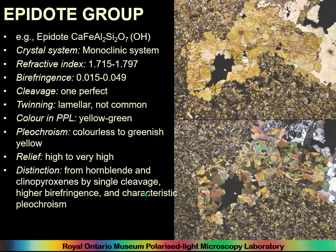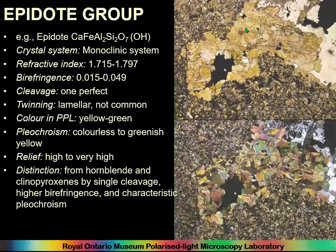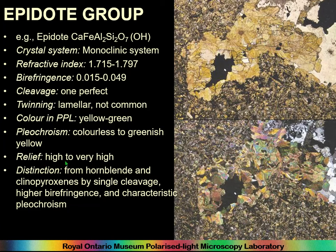Epidote has a horrible yellowish pleochroism — colors ranging to greenish yellow, a sickly yellow. You can see it ranging from lighter to darker yellow within the same inclusion. It's distinguished from hornblende and clinopyroxenes by its single cleavage, higher birefringence, and characteristic pleochroism. When you have tiny little bits in pottery, what you'll mostly be seeing is that high to very high relief and that horrible yellow pleochroism. We do get this in the Tigris-Euphrates basin.